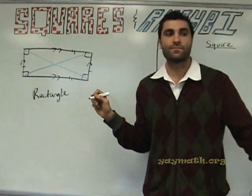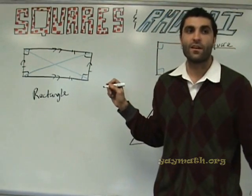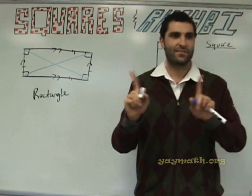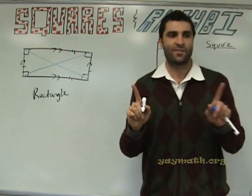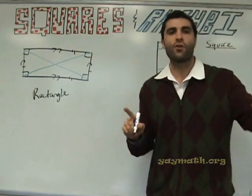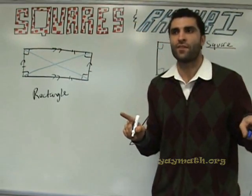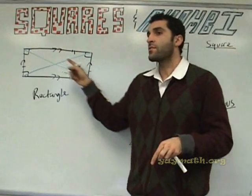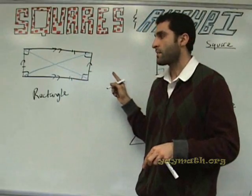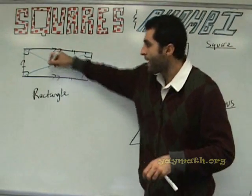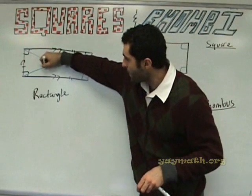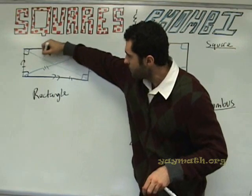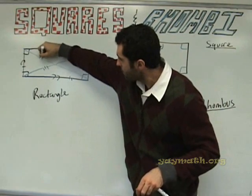The diagonals do not bisect the angles — that's a difference. Hold that thought, that's a very good thought. So for now: diagonals are congruent and they bisect each other.